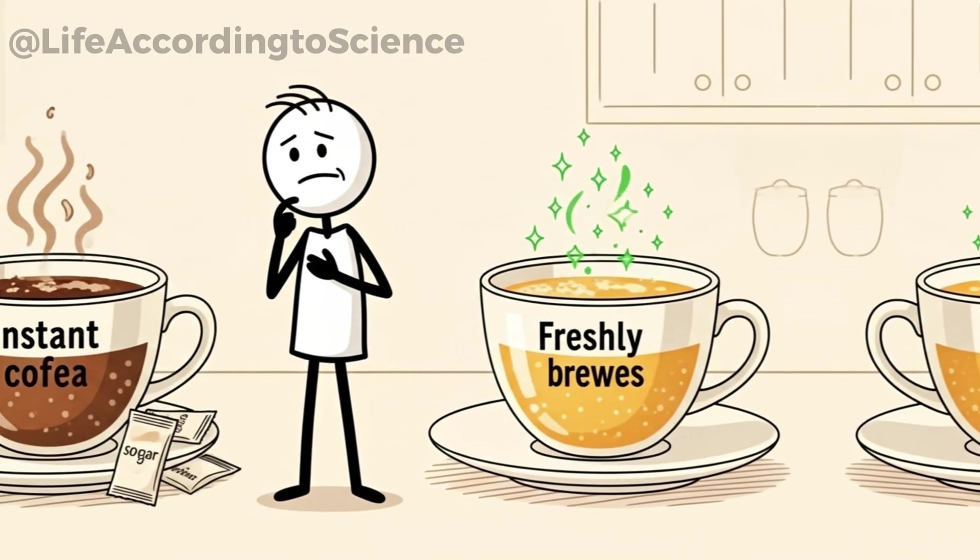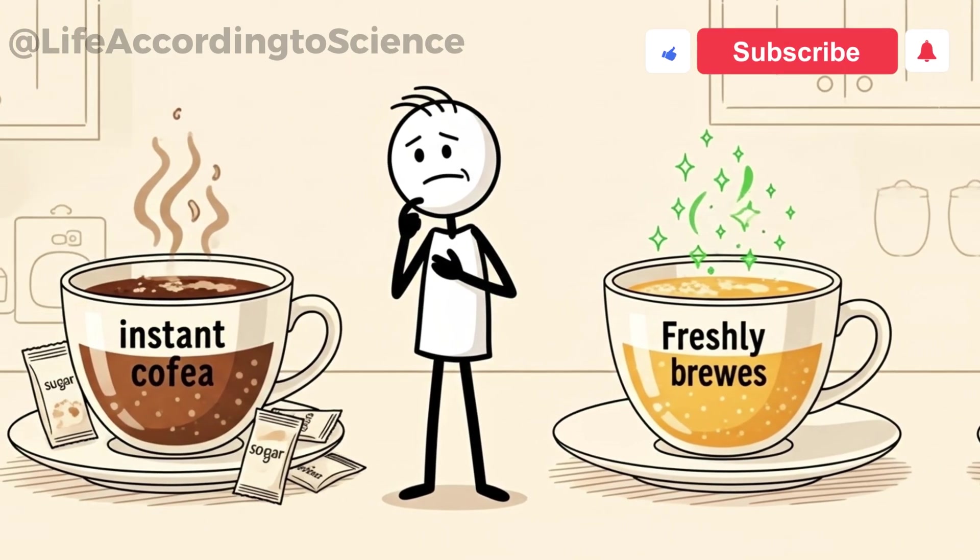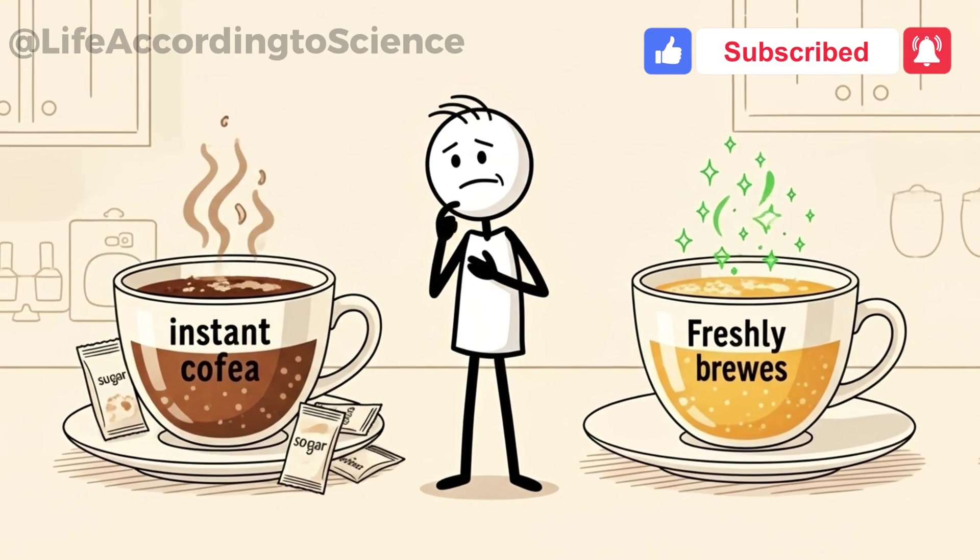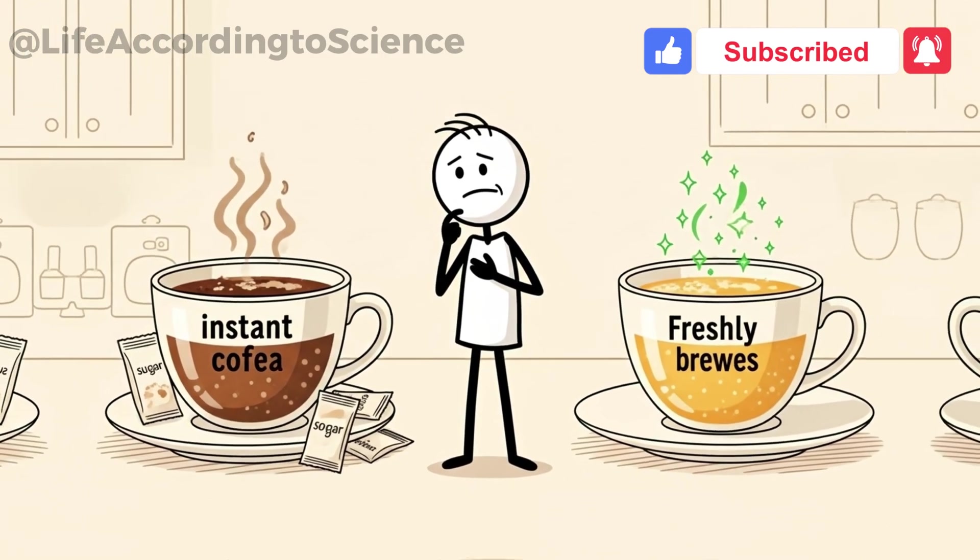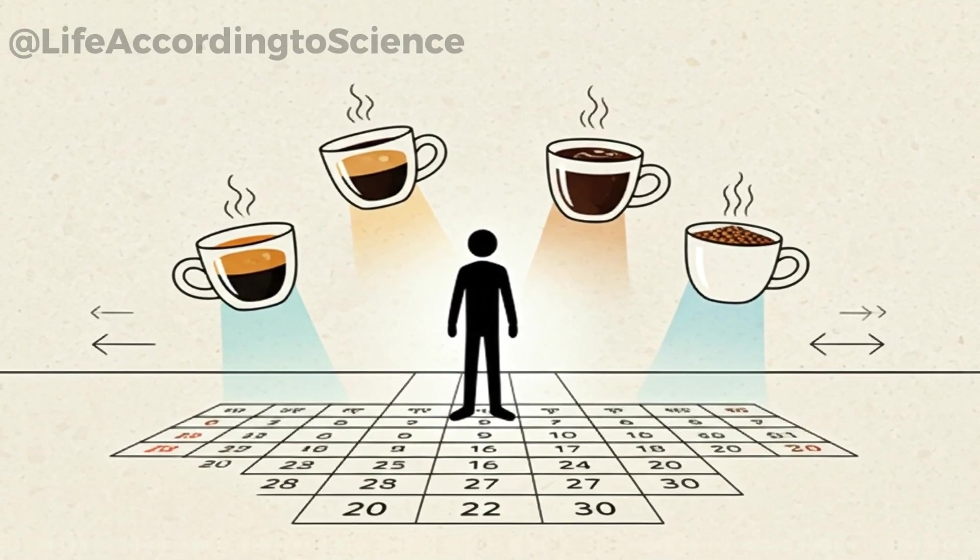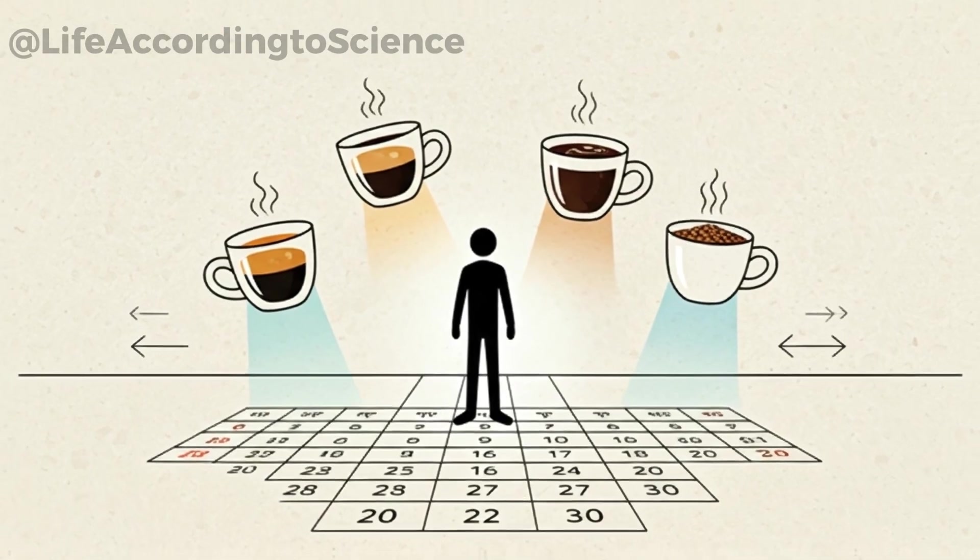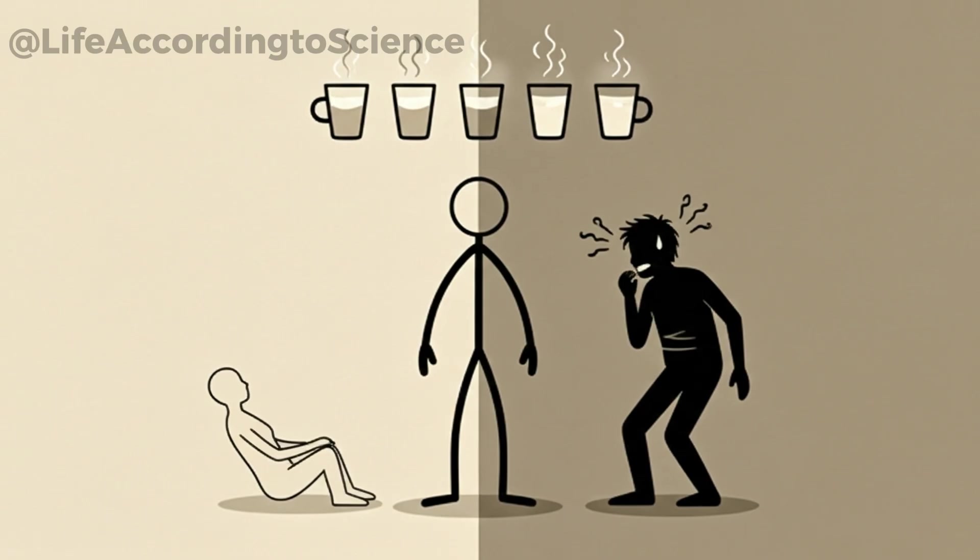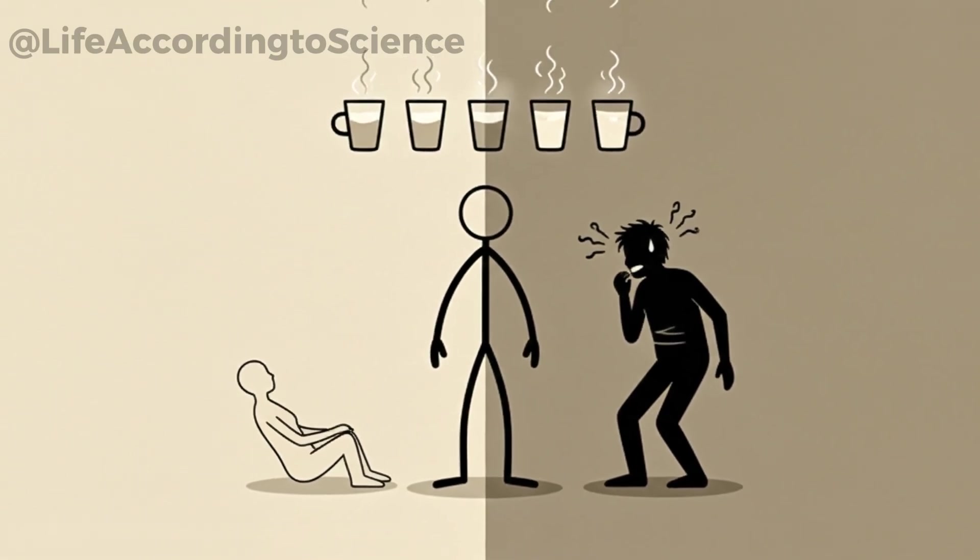On the other hand, instant coffee may contain less caffeine, but often comes with processed elements that don't provide the same antioxidants as freshly brewed beans. So, yes, the type of coffee you choose plays a major role in how your 30-day challenge affects your body. The same five cups may be a mild dose for one person and a heavy hit for another.